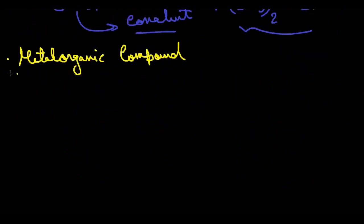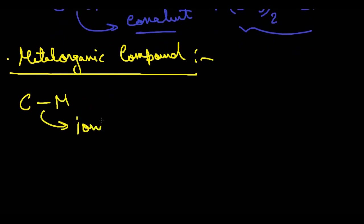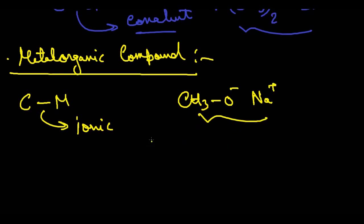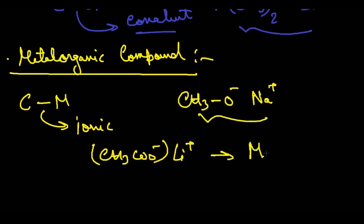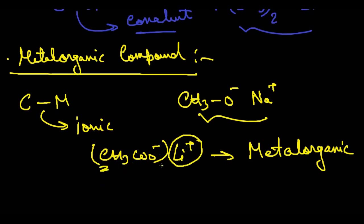For metal organic compounds, the linkage between the carbon atom and the metal atom is ionic in nature. Examples include CH₃O⁻Na⁺, where the linkage between carbon and sodium is completely ionic. Similarly, lithium acetate is also a metal organic compound because the linkage between lithium and the carbon atom is purely ionic in nature.